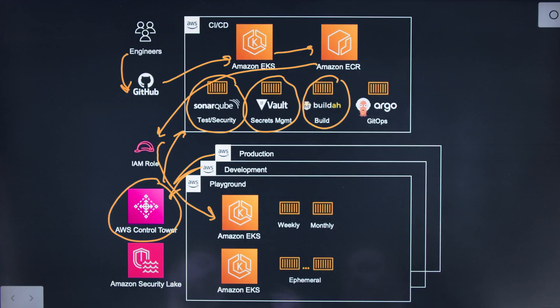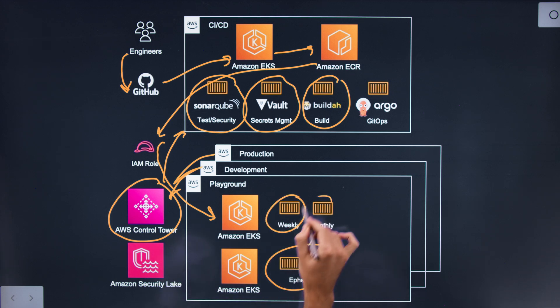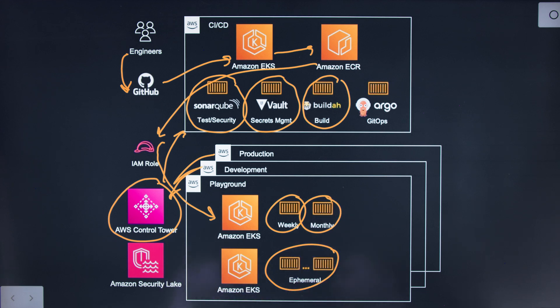Once your engineers are in the Playground, why do we have these different EKS clusters? We've got a bunch of different workloads to run within the Playground environment. We have a couple of ephemeral environments that are running on the feature branch the engineer is working on — the upcoming feature release. We've also got some environments that keep the latest running, which allows product managers and stakeholders to review in-flight work.